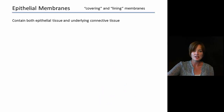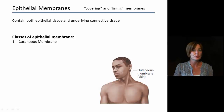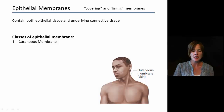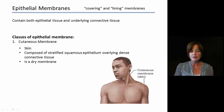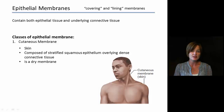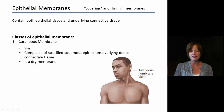Looking at different classes of epithelial membranes, the first class is cutaneous membranes. We're going to spend a lot of time on these, so here we're just introducing them. The cutaneous membranes are the skin or the integumentary system — basically a covering of the body. It is composed of stratified squamous epithelium overlying some dense connective tissue. One thing that makes this different from other epithelial membranes is that this is going to be a dry membrane.